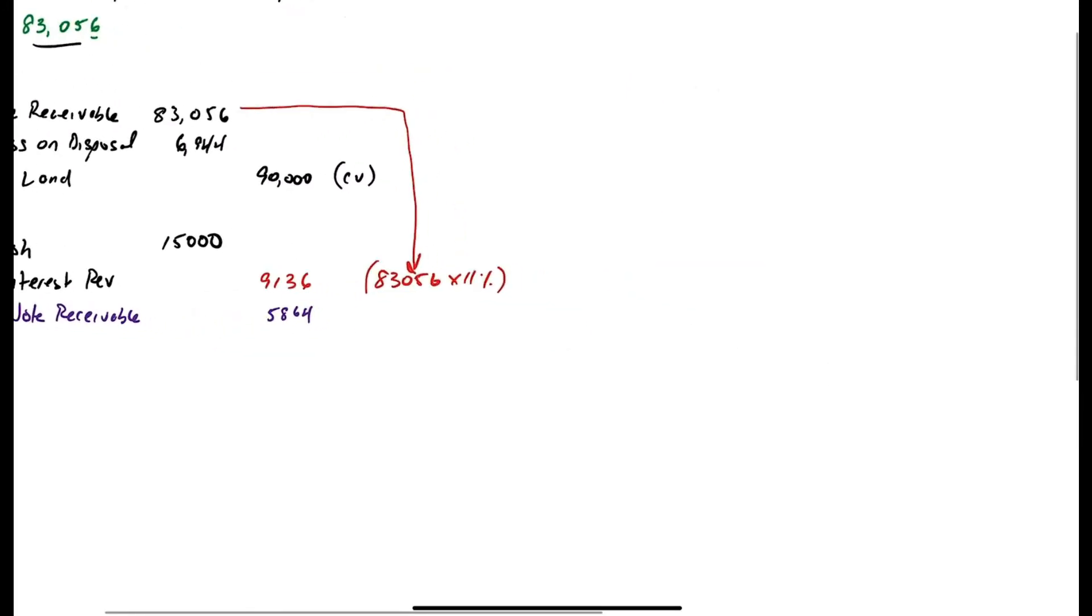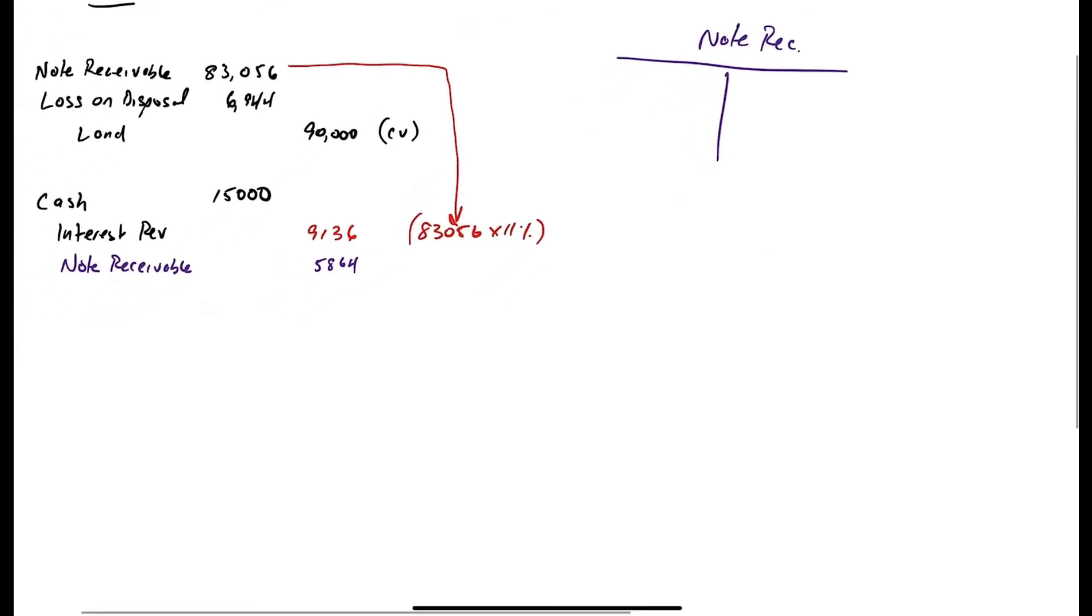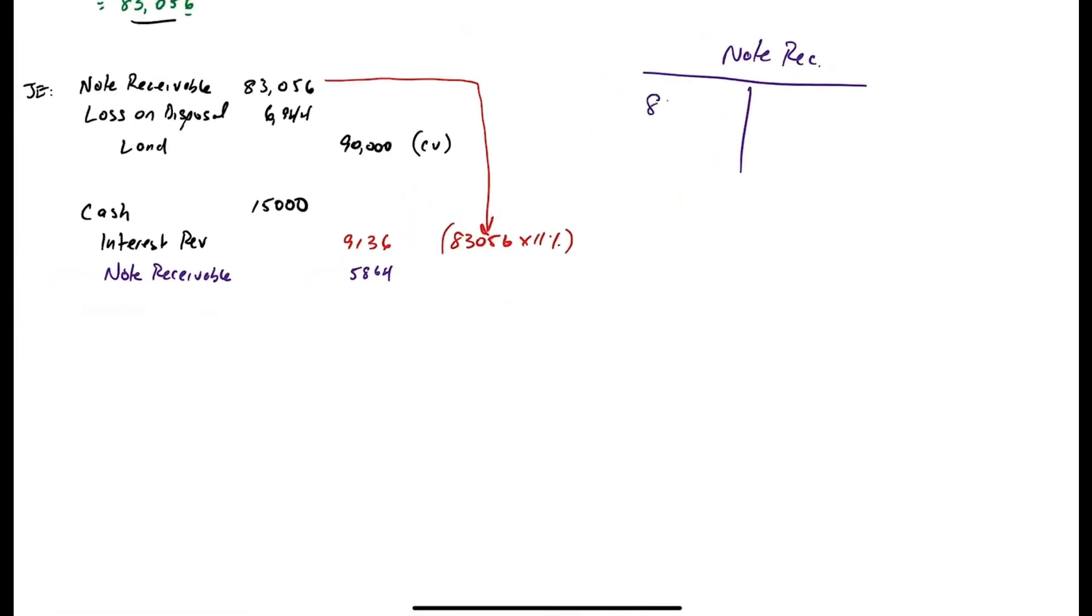Here's what happens. The note receivable is an asset. It's basically a loan that you've made to somebody, and it's now carried at $83,056. And with each payment of $15,000, that includes both principal and interest.